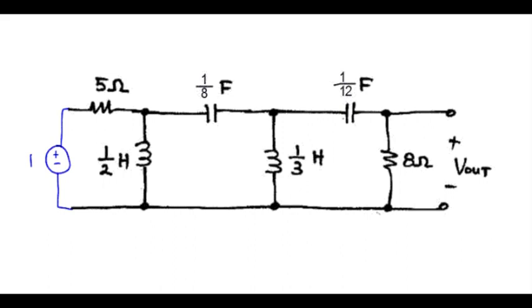Now since we're using the proportionality method, that means we assume a value for Vout that's convenient. Maybe in this case I'll pick 8 volts.